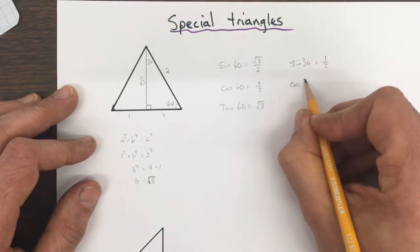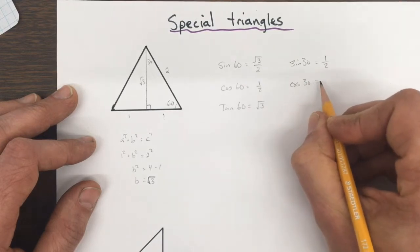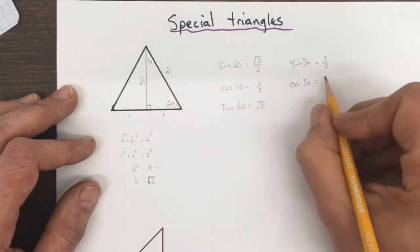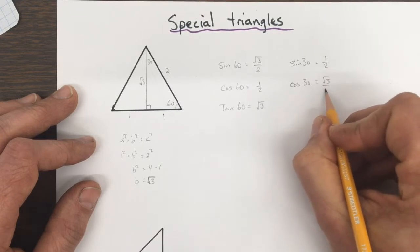The cos of 30 equal to adjacent over hypotenuse, root 3 over 2.